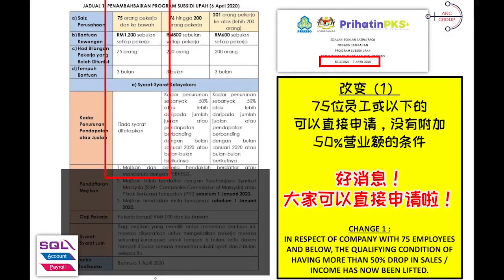If your number of employees is within 76 to 200, then the amount would be RM800 per employee. If you have more than 201 employees and above, then your Wage Subsidy Program will be RM600 per employee.